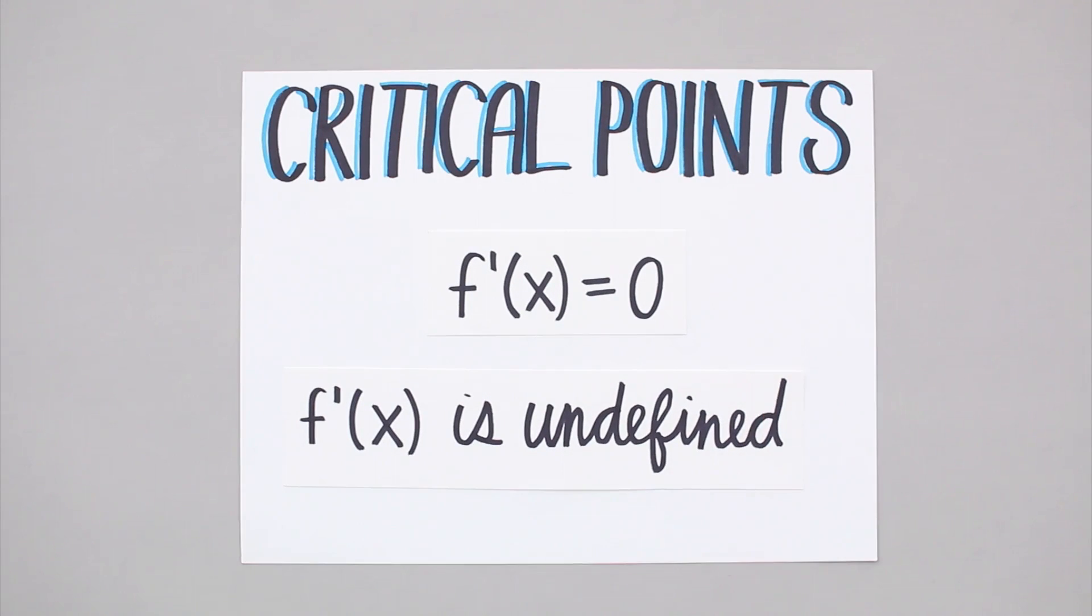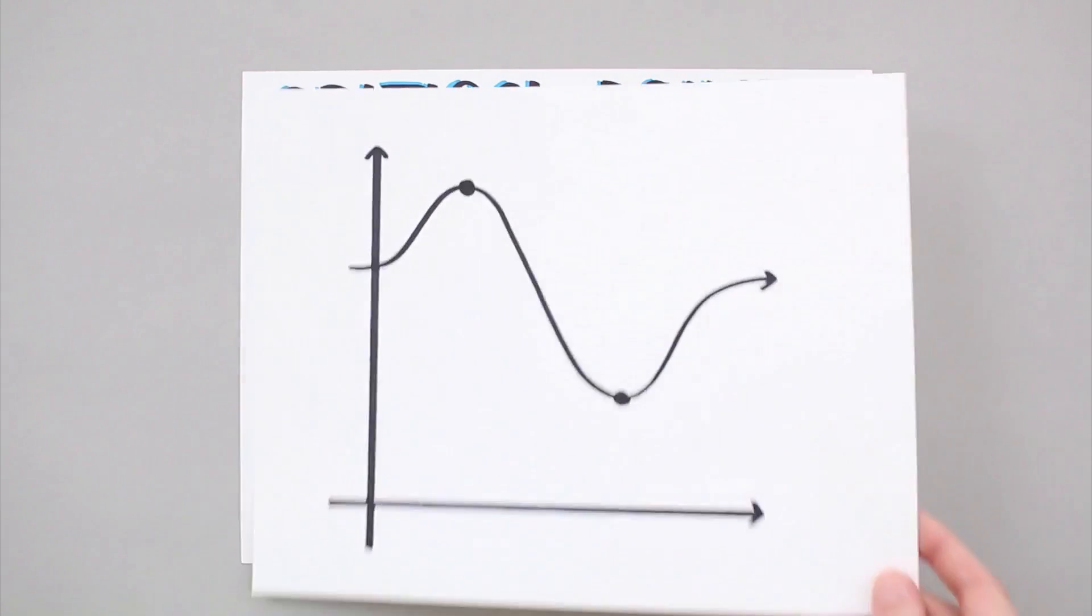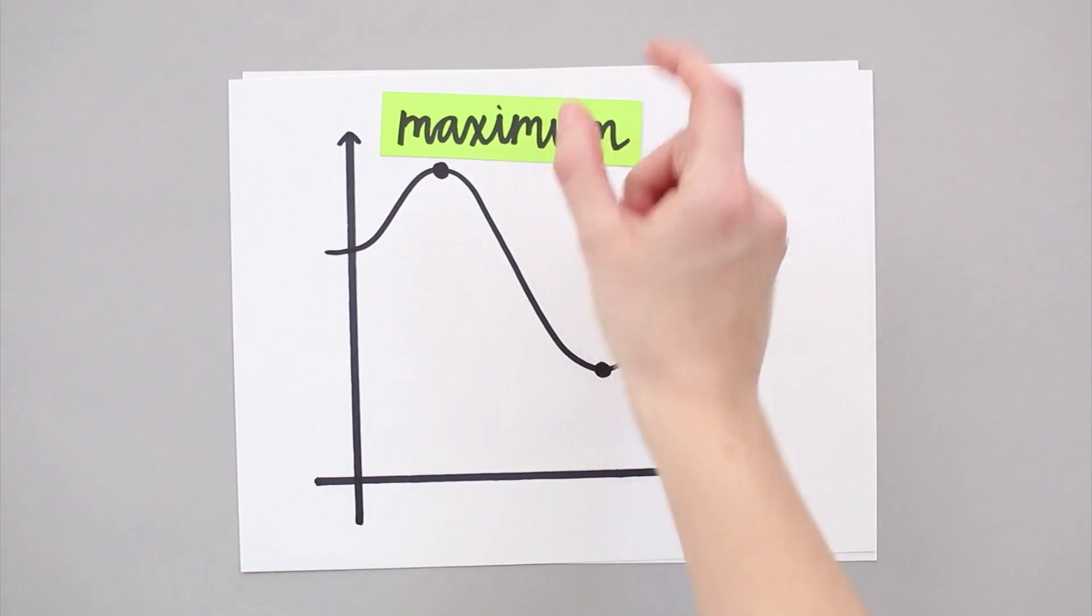That means that critical points occur wherever the slope of the graph is completely flat, which doesn't happen for every function. Knowing where these points are can help you answer questions about the function like, what's the function's maximum or what's the function's minimum?